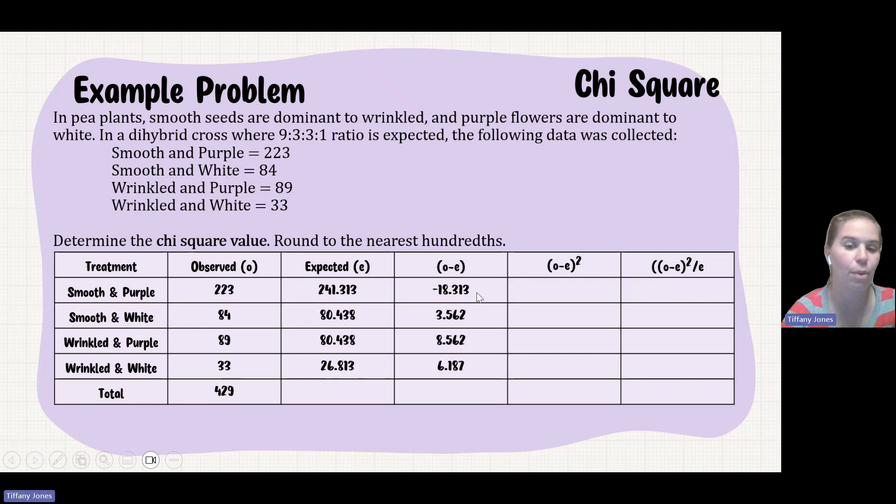So we then do observed minus expected and it's going to give me each of my values. So 18.313, 3.56, 8.56, 6.187. I'm going to square each of these values, giving me 335.366, 12.688, 73.308, 38.279.